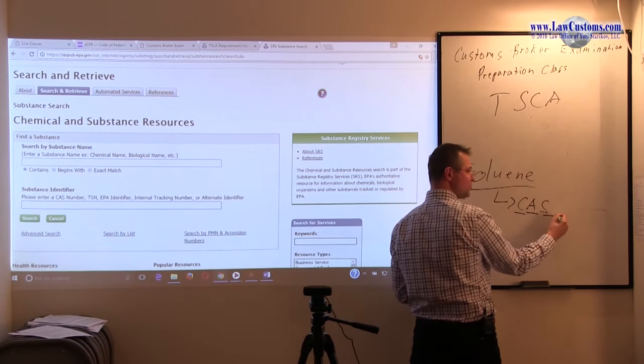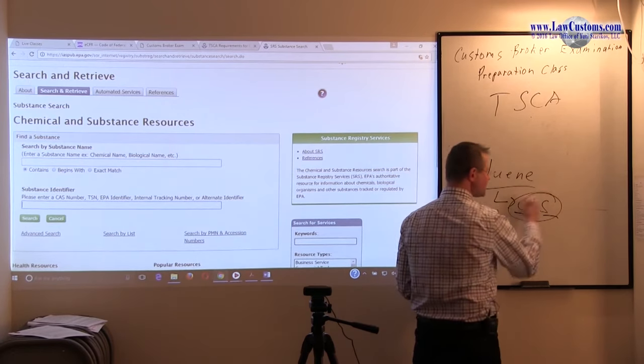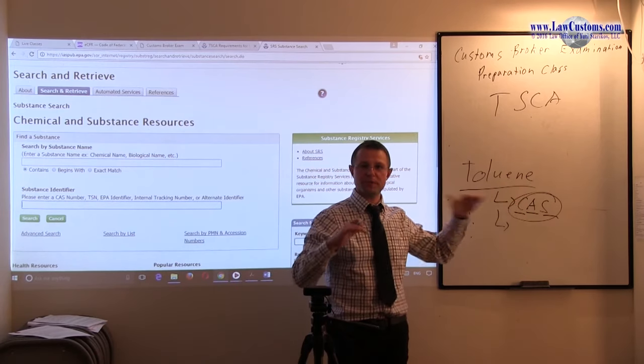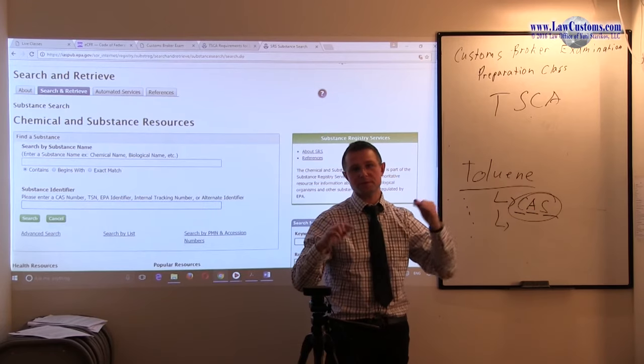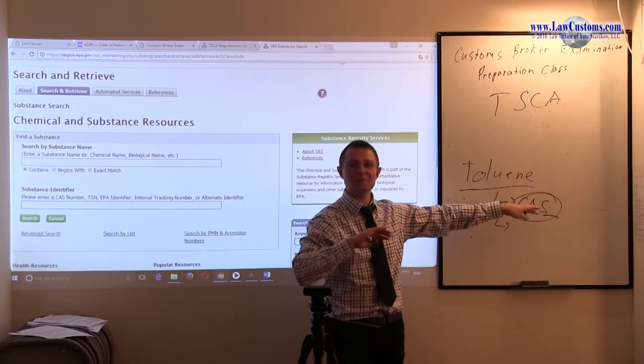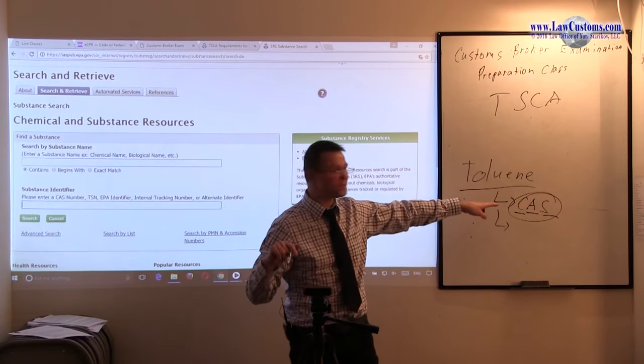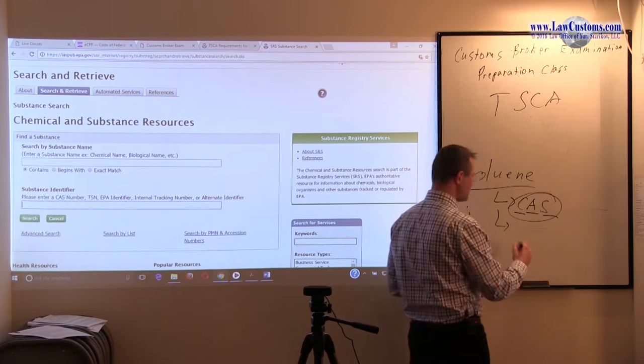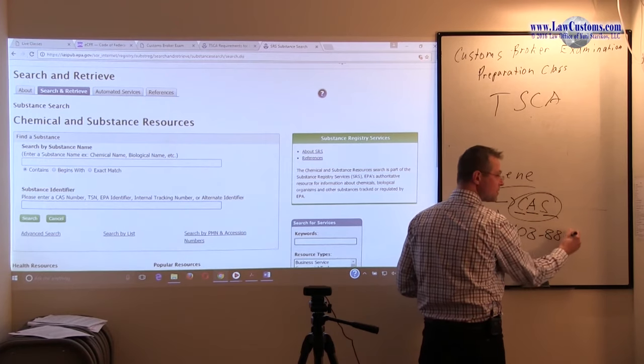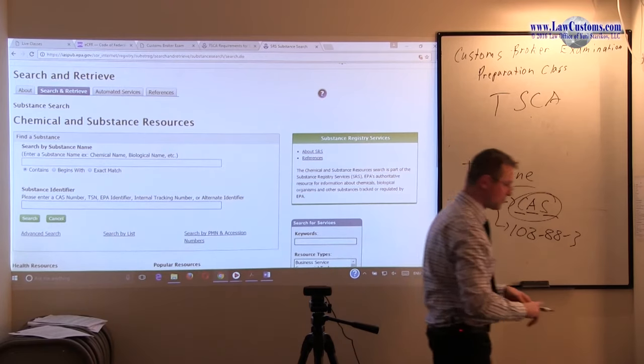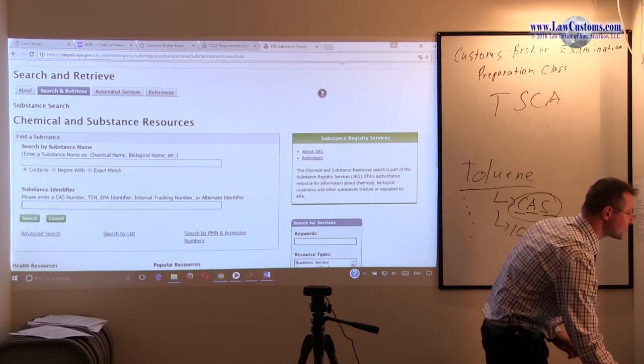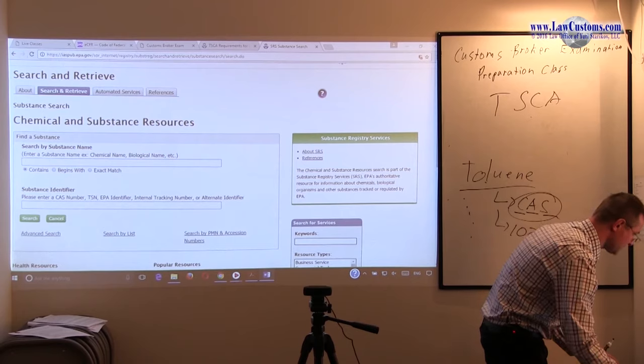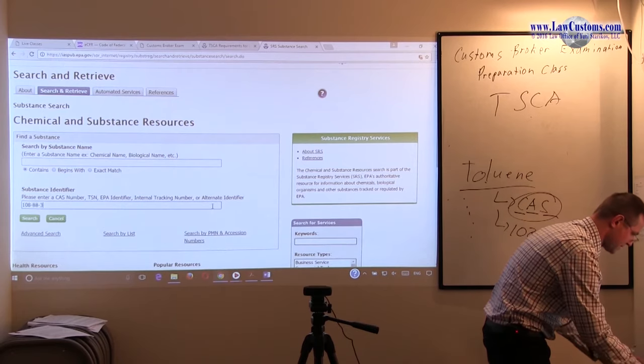It may be easier for you in this case to put a CAS number, or you may put the name of the chemical itself. Let's see how toluene plays out. Toluene in our case has a CAS number. I think it's called Chemical Abstract Service number. It's very prevalent in the Harmonized Tariff Schedule because even harmonized tariff schedule numbers have their own CAS number heading. This is like a mix of private and public enterprise coming together.